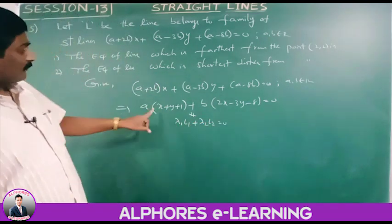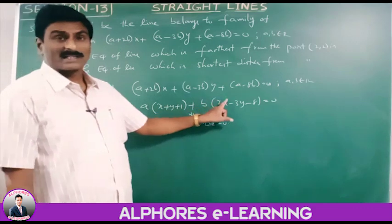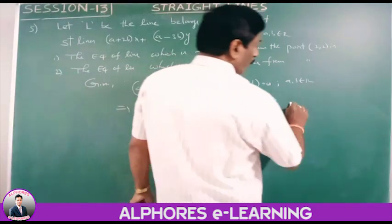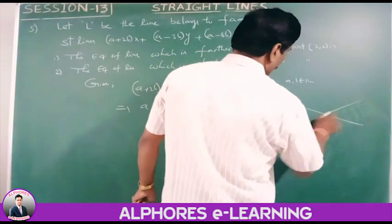This is the family of concurrent lines. We find the point of concurrency by solving l1=0 and l2=0.